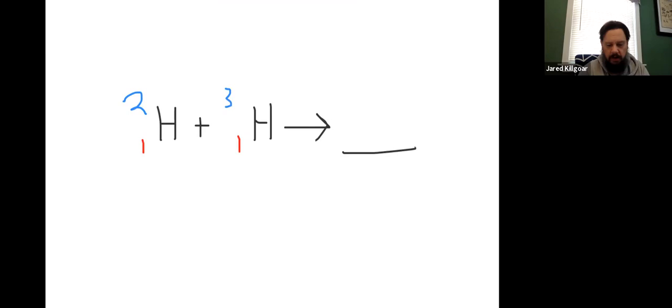We have deuterium, which is an isotope of hydrogen with a mass of 2, plus tritium, another hydrogen isotope, with a mass of 3. And then you're creating blank plus 1 neutron.